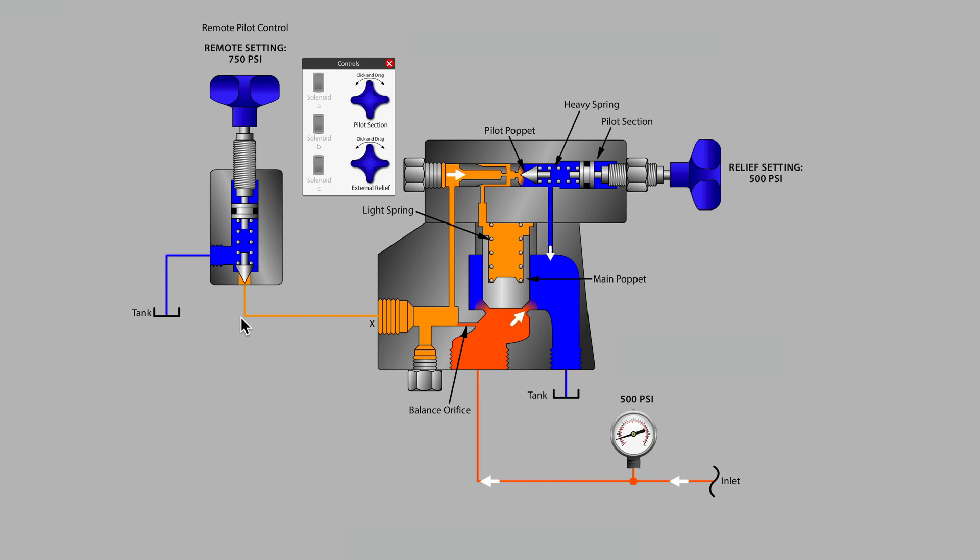This is essentially a direct acting relief valve, usually with a fairly fine thread, and it allows the operator to make adjustments to the maximum system pressure, which remember is being controlled over on the main poppet, but it allows the operator at a distance to set that main pressure.